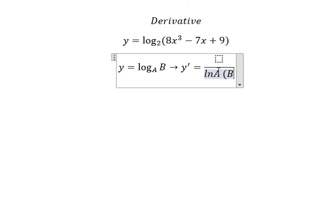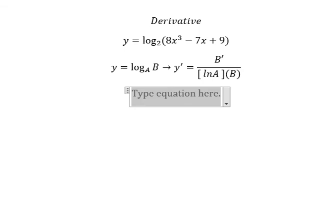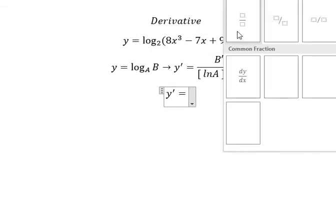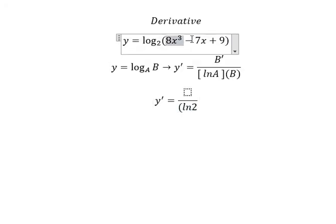multiplied by B, and we do the first derivative of B. So if we apply this formula, you will have ln 2. We put it in here, and we keep the value the same.